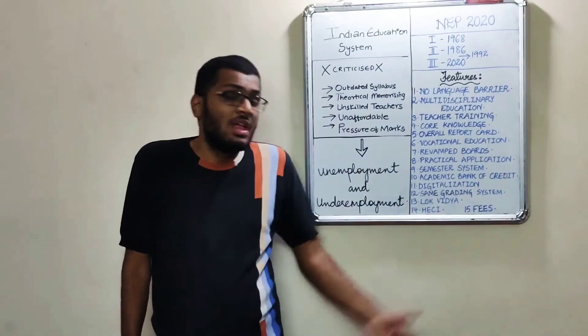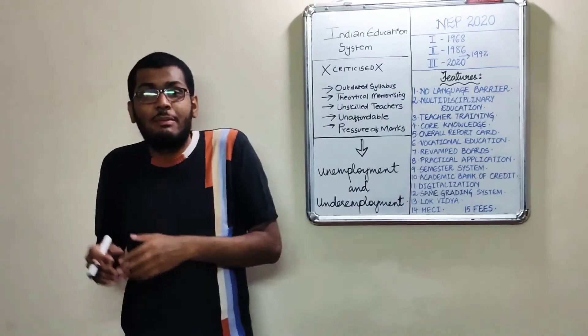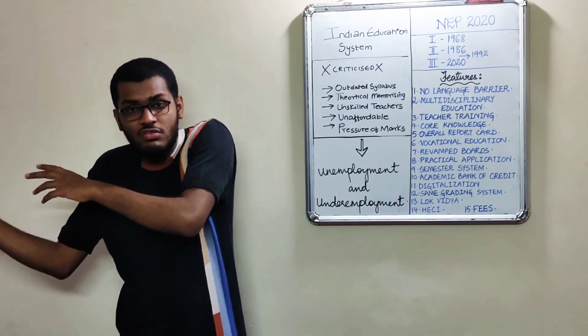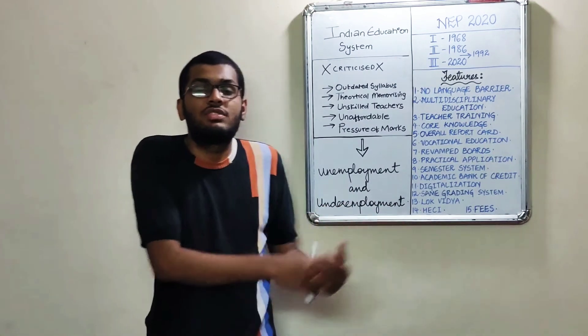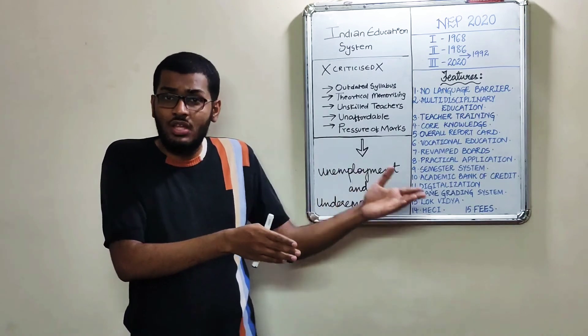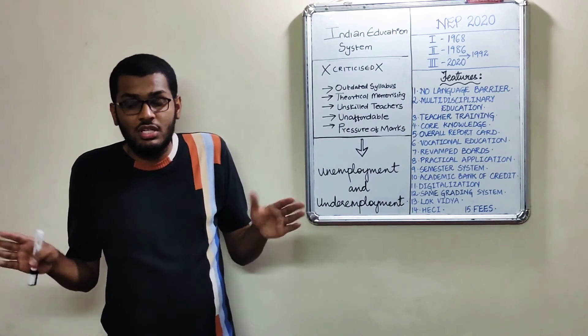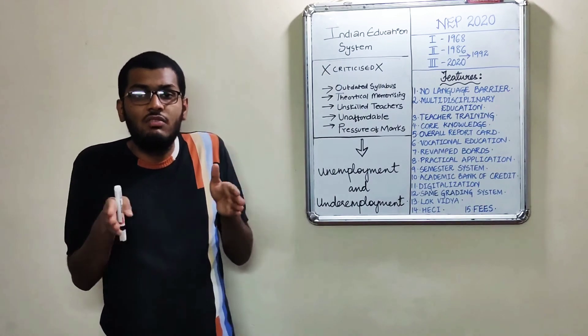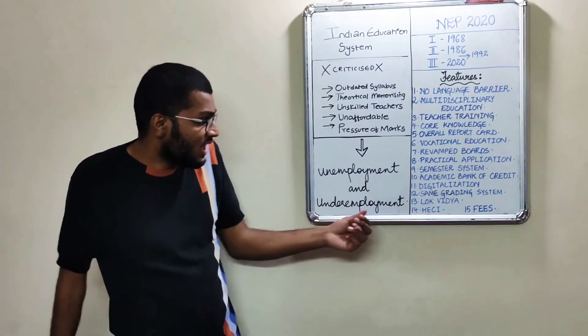And number twelve is same grading system. Whichever university you're in, the plan is to make the grading system the same. For example, if you study from XYZ university where there's yearly syllabus, and you study from another university where it's semester system, if we make one grading system, there won't be confusion. One system will remain, so every student will have the same comparison parameters.